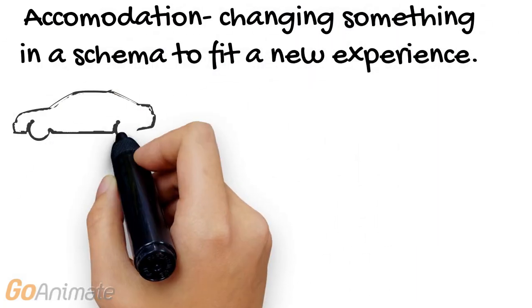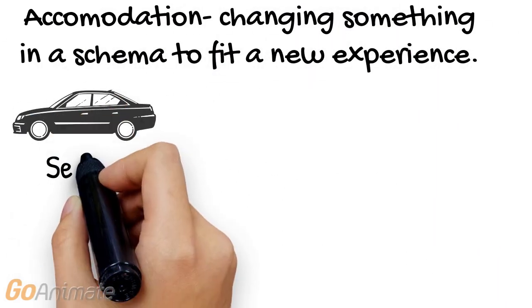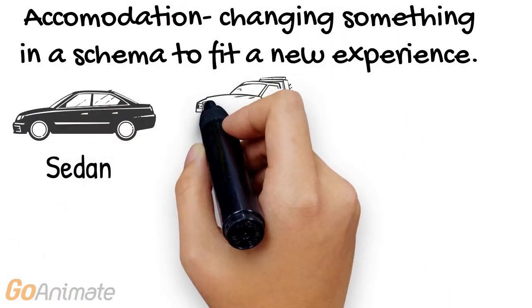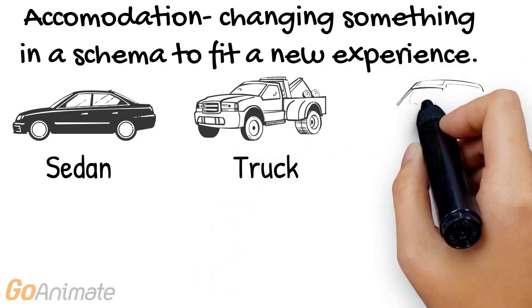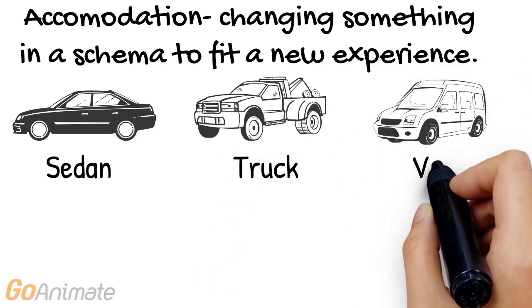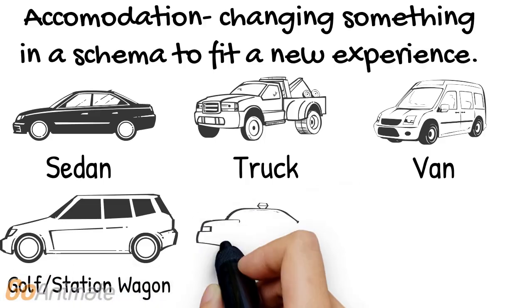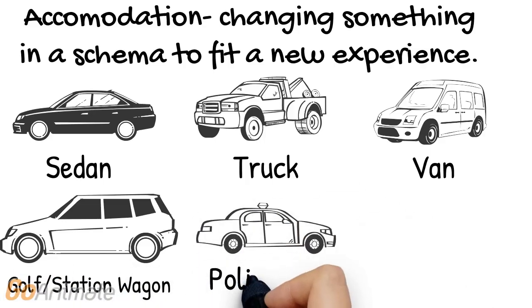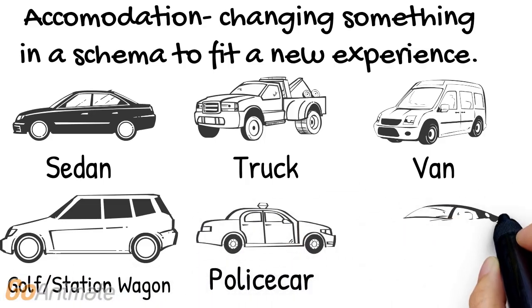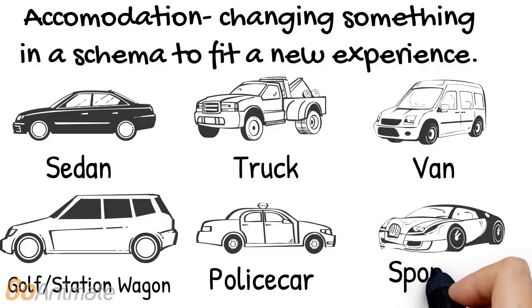A child may learn eventually that a van has a little bit more space than a regular car, and a truck, unlike a car, has a truck bed. When a child learns to differentiate a truck or a van from a car or a sedan, the process of changing or altering that schema is known as accommodation.